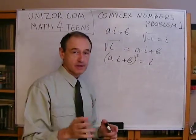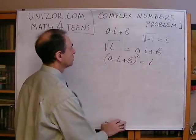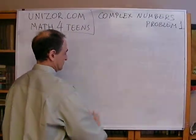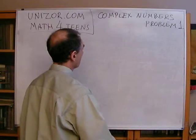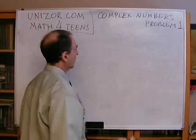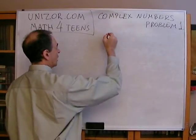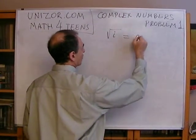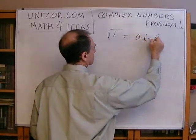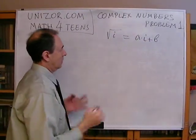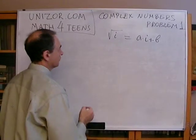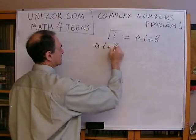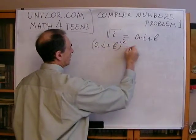Now press the pause button, think about this problem, and I will continue with the solution. Okay, so we have to find what the square root of i is, which means we have to solve this equation. How can it be solved? Very easily. Since ai plus b, squared, is equal to i...